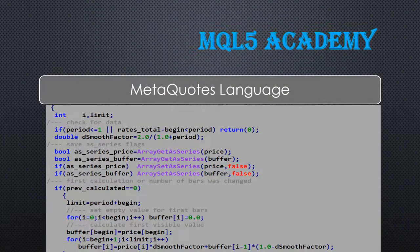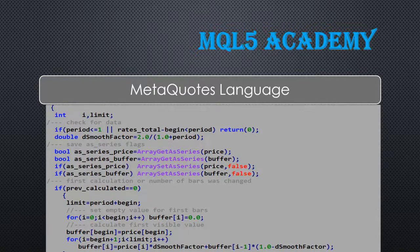Now let's talk about MetaQuotes' language, MQL5. This is the language used to create our expert advisors, unique indicators, open positions, and almost everything we can do on MetaTrader 5.